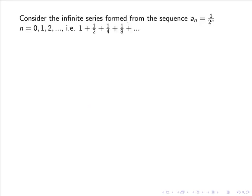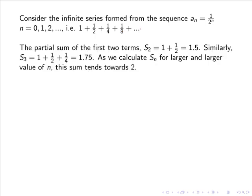Consider the infinite series formed from the sequence aₙ = 1/2ⁿ where n is 0, 1, 2 and so forth, i.e. 1 + 1/2 + 1/4 + 1/8 and so forth. The partial sum of the first two terms denoted S₂ is 1 plus a half, so 1.5.